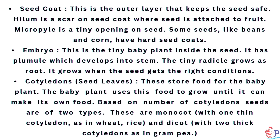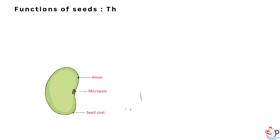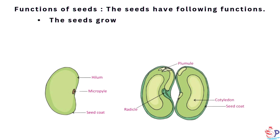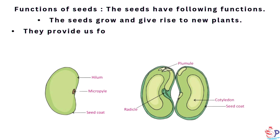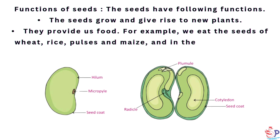Based on the number of cotyledons, seeds are of two types: monocot, with one thin cotyledon as in wheat and rice, and dicot, with two thick cotyledons as in gram and pea. The seeds have following functions: seeds grow and give rise to new plants, and they provide us food. For example, we eat the seeds of wheat, rice, pulses and maize, and also use them in the form of spices.